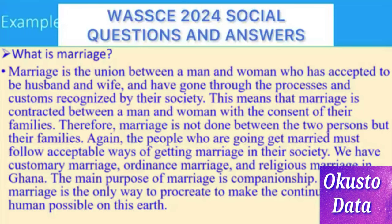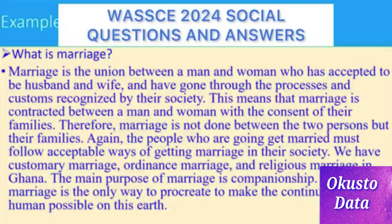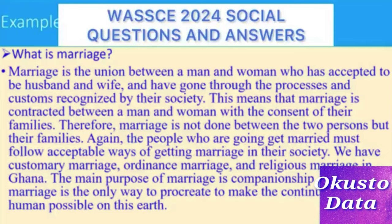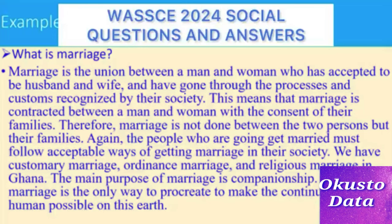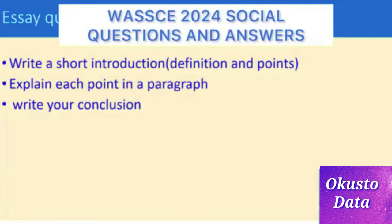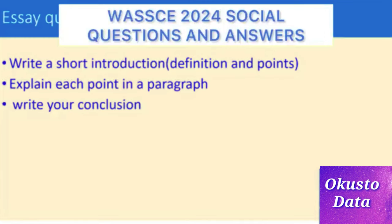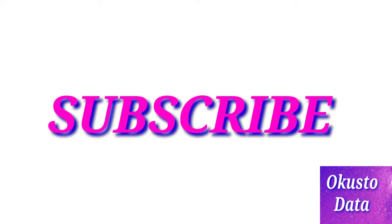You can then add explanations: this means that marriage is contracted between a man and a woman with the consent of their families. Marriage is not done between just the two persons but their families. The people getting married must follow acceptable ways in the society — we have customary marriage, ordinance marriage, and religious marriage in Ghana. The main purpose of marriage is companionship and so on. Write a short introduction or definition, explain each point in a paragraph, then write your conclusion. This is how you answer essay questions. Thanks for watching and please subscribe.